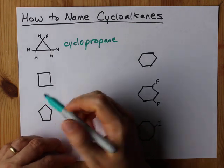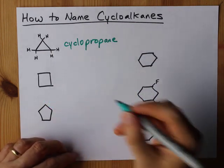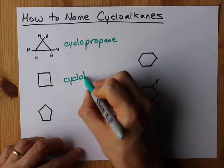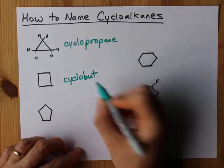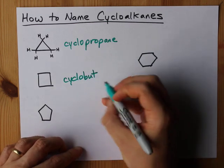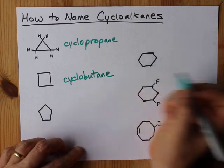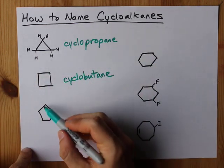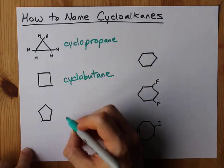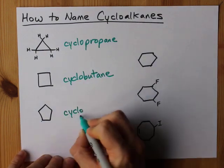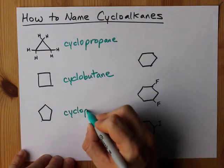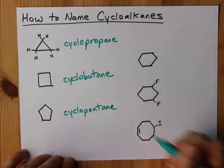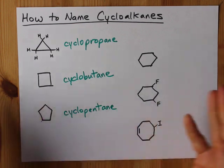A ring of four carbons single bonded: cyclo for the ring, bute for the four carbons, and they're all single bonded so it's -ane. For five corners: ring, cyclo, five is pent, single bonds give -ane. Cyclopentane.